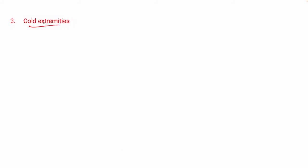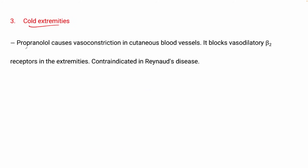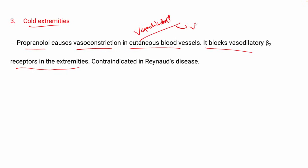The next adverse effect is cold extremities. Propranolol causes vasoconstriction in cutaneous blood vessels by blocking vasodilatory beta-2 receptors in the extremities. This leads to more vasoconstriction and the vasodilatory effects are blocked. In Raynaud's phenomenon, some areas of the body feel cold and some feel hot.